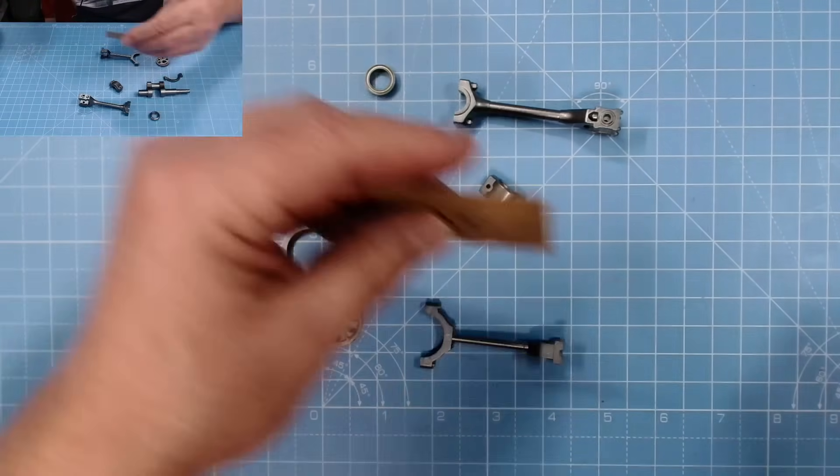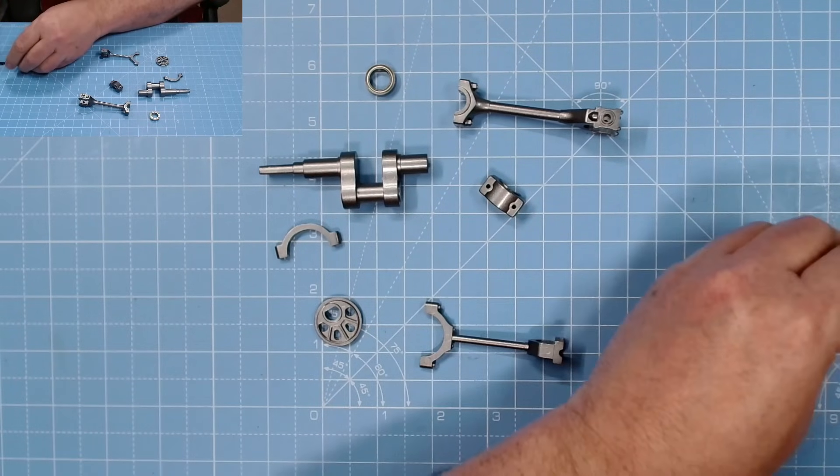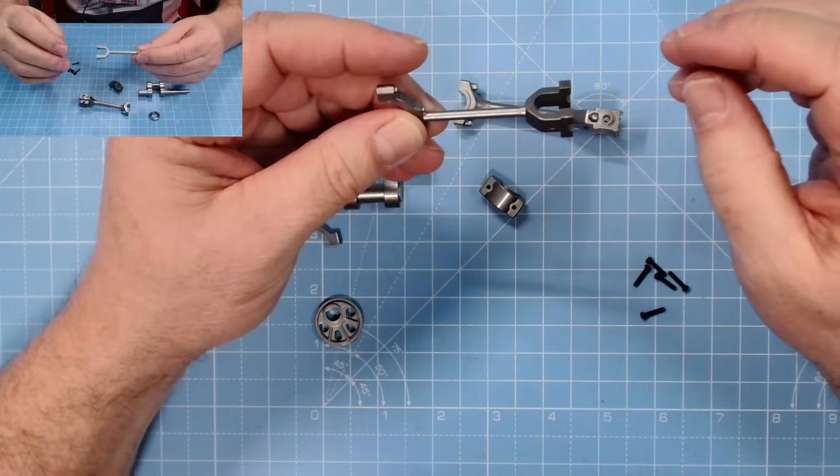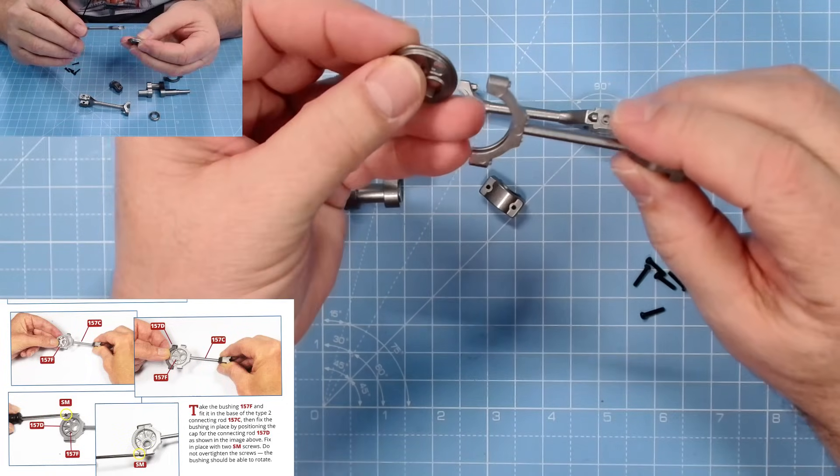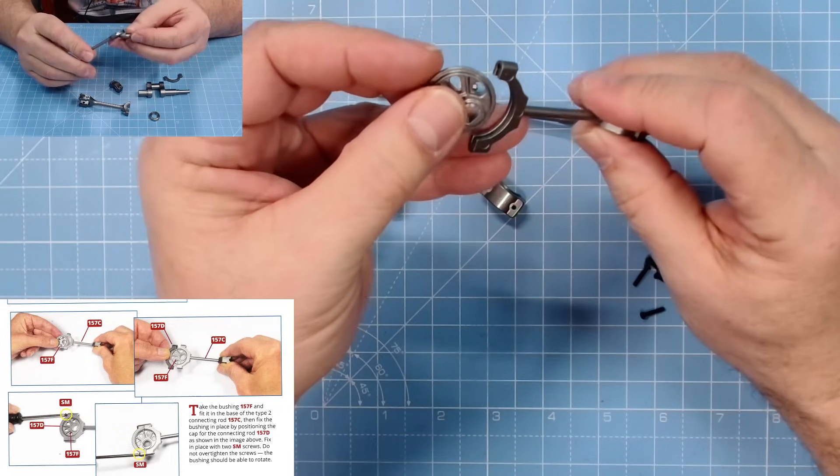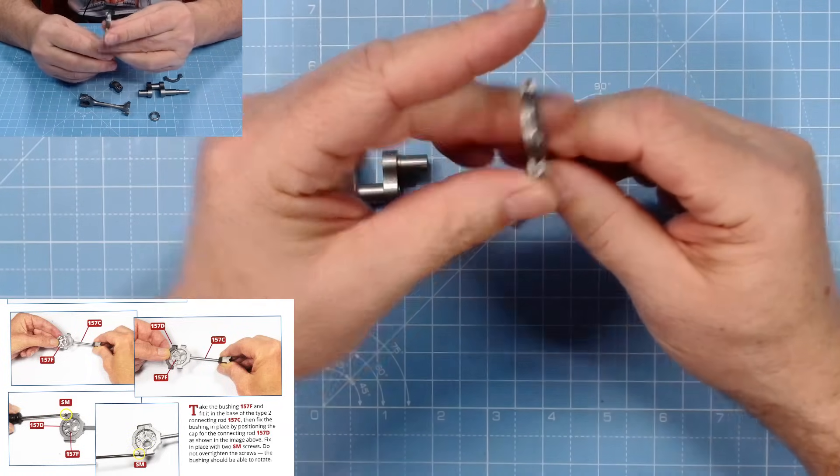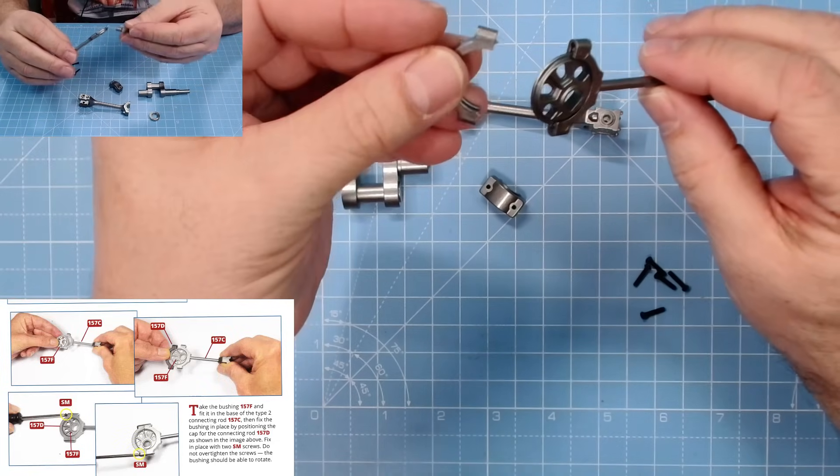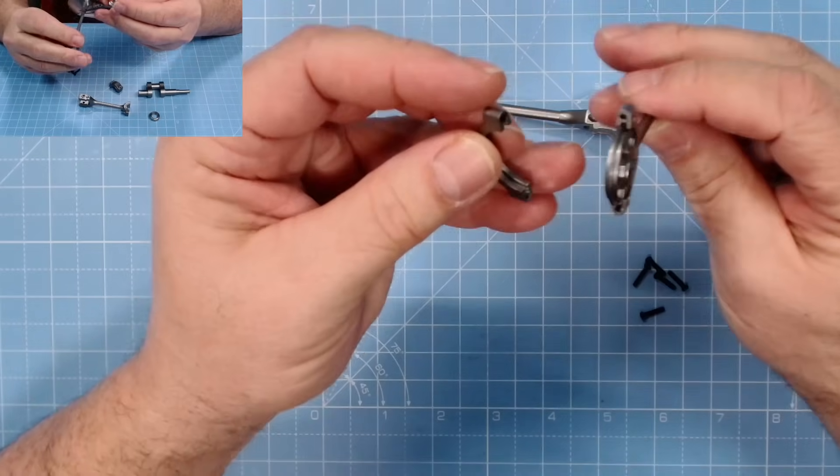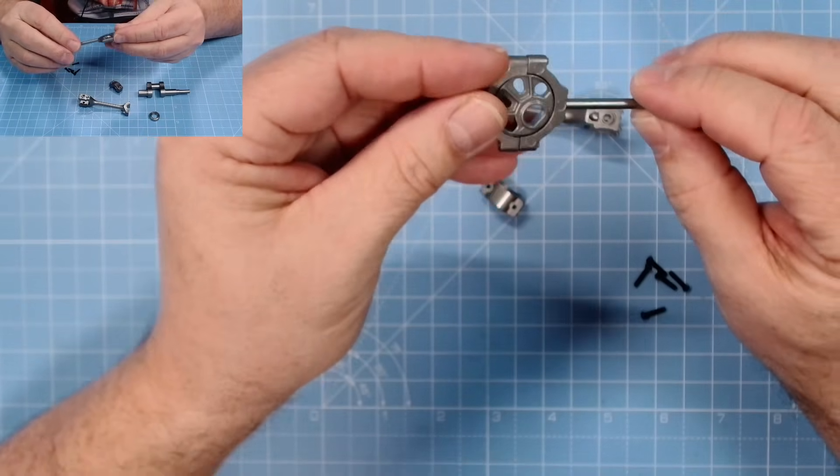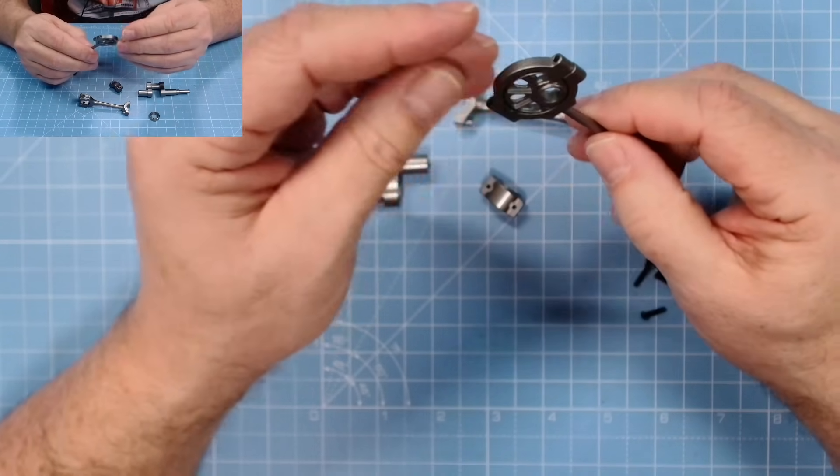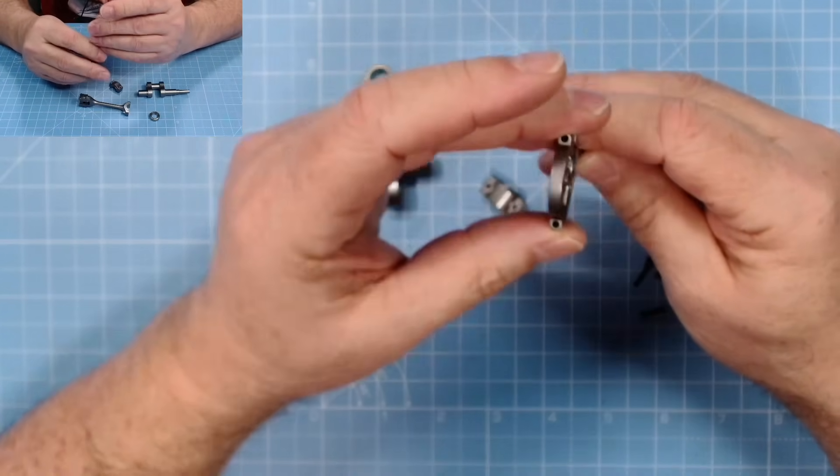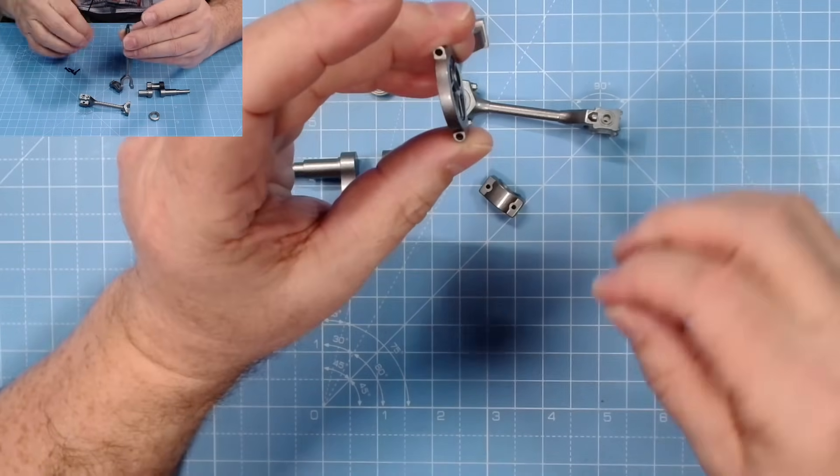Okay, those are our parts. So we need the SM screws, let's get all this together, they're quite long. First off we need 157C and 157F, and basically you can see where that sits into there like so, and then we need 157D which will fit over the top there, a couple of little locating pins on there as well that will lock itself that way. It doesn't stipulate which way because it looks exactly the same both ways. And then we need a couple of these SM screws.